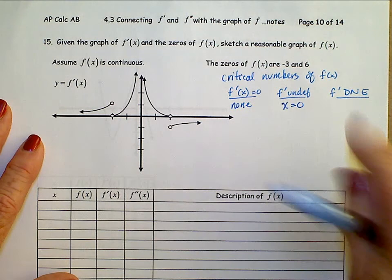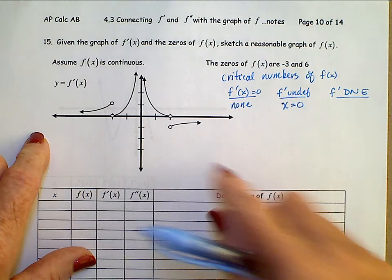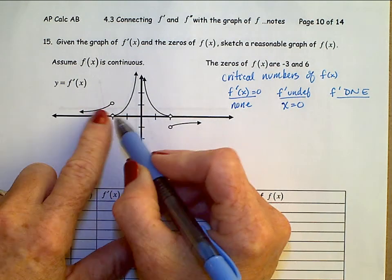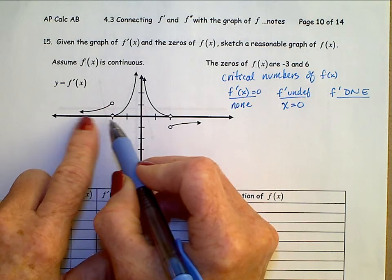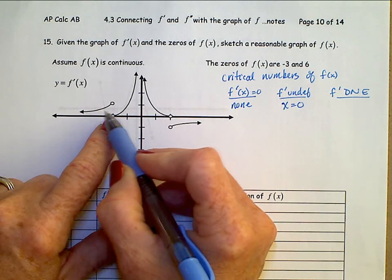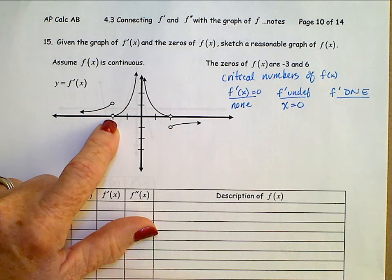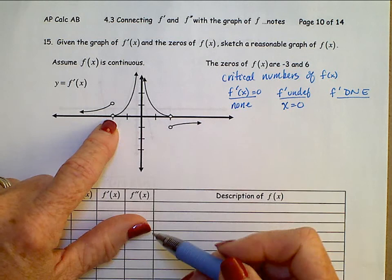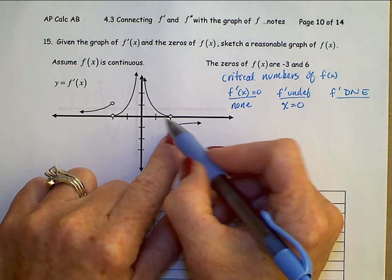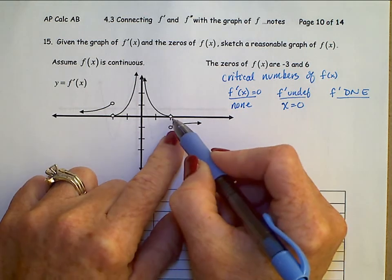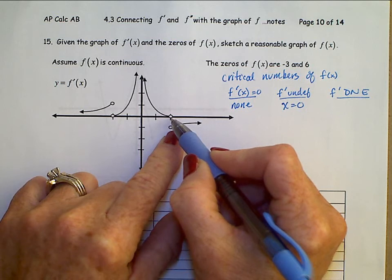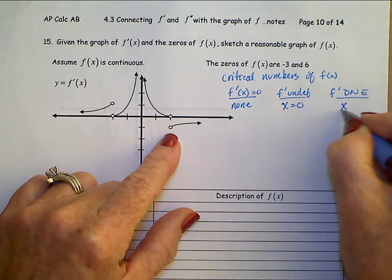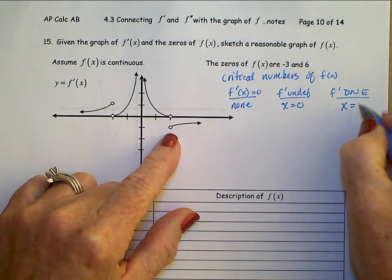f prime does not exist — that's looking at f prime from the left versus f prime from the right. f prime from the left side of negative 2 is getting close to 1, and f prime from the right side of negative 2 is getting close to 0. Similarly, f prime from the left side of positive 2 is getting close to 0, and f prime from the right side of positive 2 is getting close to negative 1.